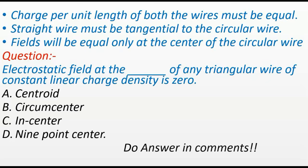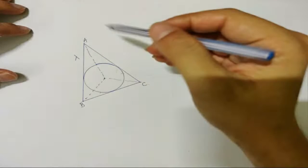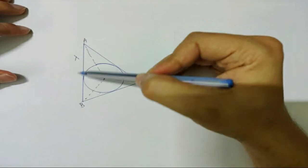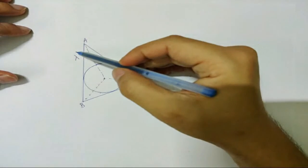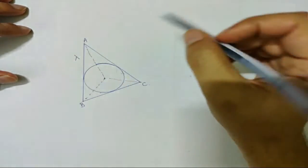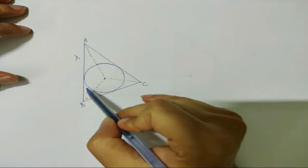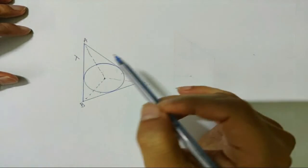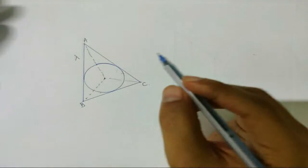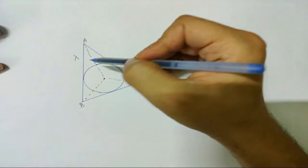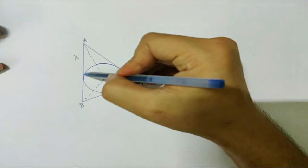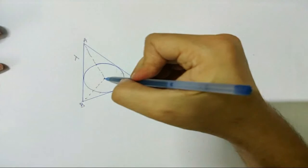So I have taken this as a triangular wire ABC having a charge density lambda all over it, and I have drawn an incircle of this triangular wire. Now we already know that the electric field due to a straight wire and the circular wire at the center of that circular wire will be equal.